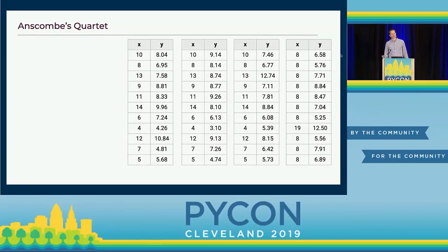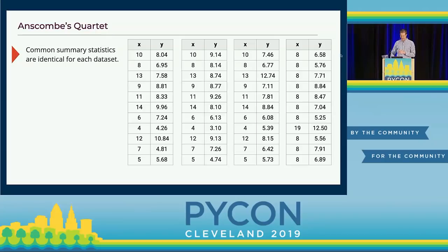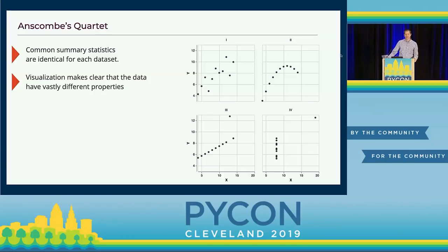What is visualization? If you take a data set like this, what visualization does is it tries to take this tabular representation and put it in a form that makes it more intuitive, so that at first glance you can find the relationships in the data. Does anyone recognize this data set? This is a data set where, if you take common statistical summary statistics — like the mean, standard deviation, correlation — all four data sets are the same. But if you visualize them, you start to see very different properties.